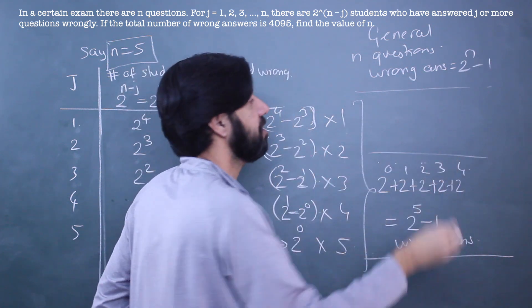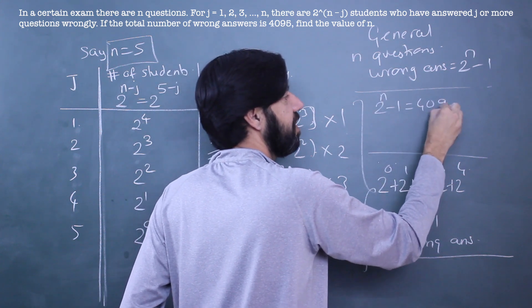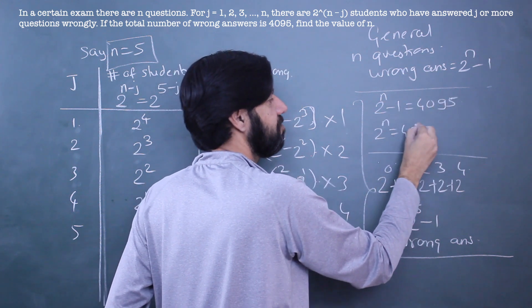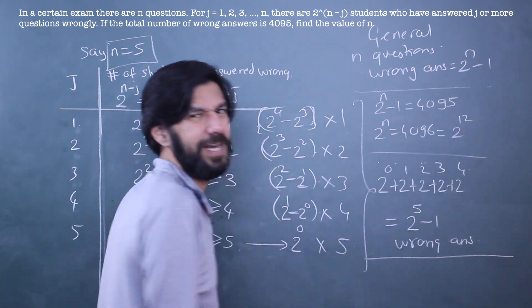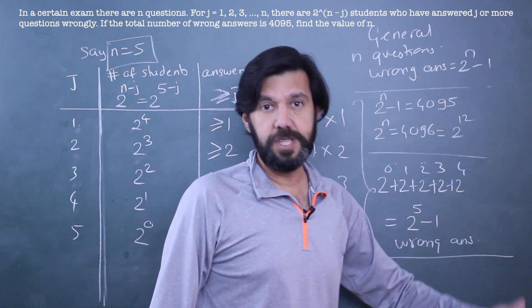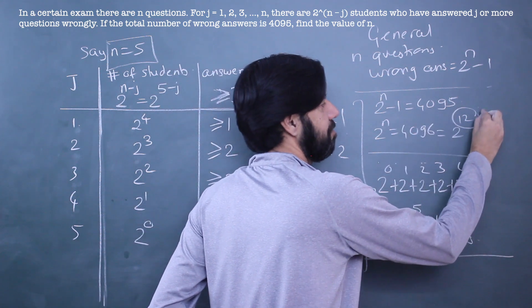And what are we given? Coming back to the specific question, we are given that 2^n - 1 wrong answers equals 4095. Take one to the other side, 2^n is 4096. We should know 4096 is 2^12, it's just two steps from 1024: 1024, 2048, 4096. So n value is 12.